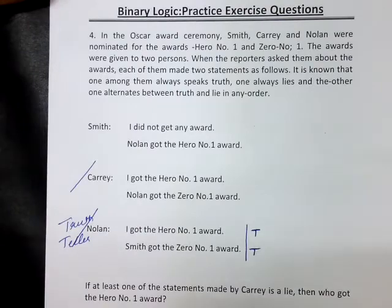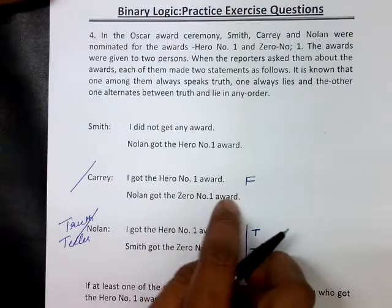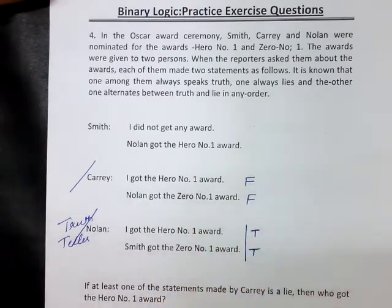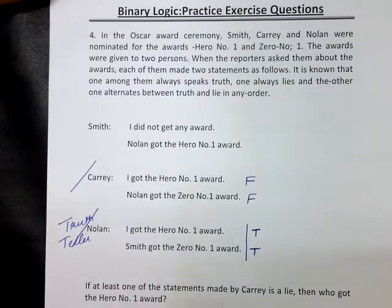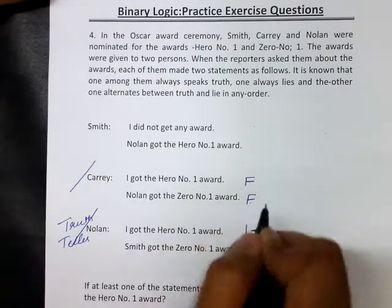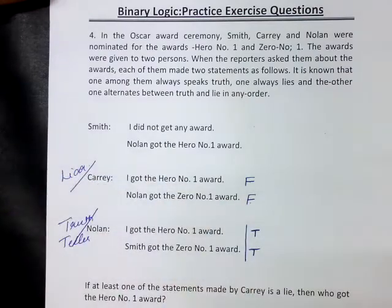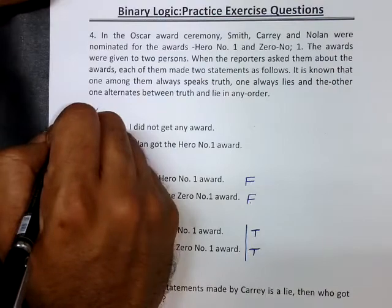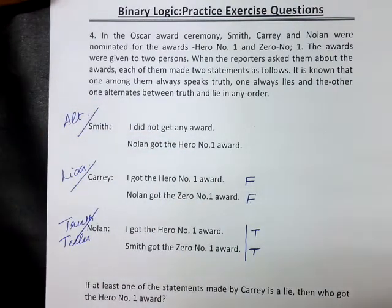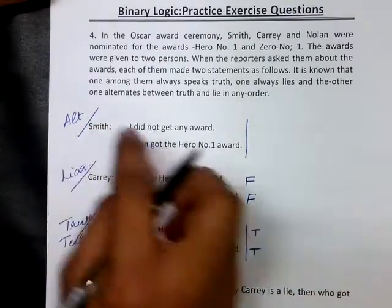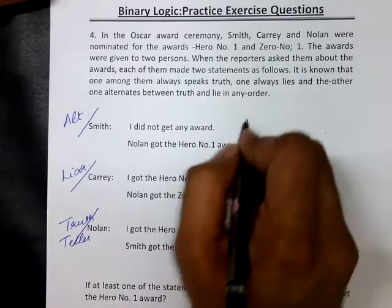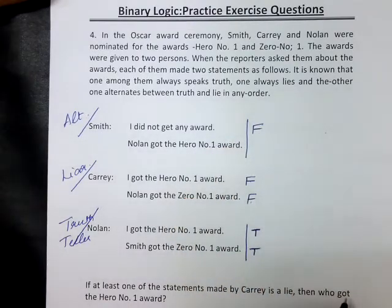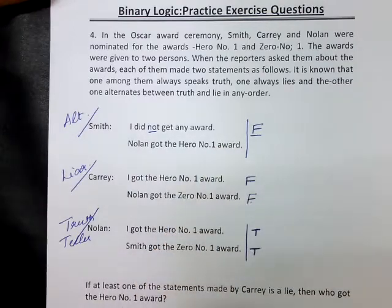Now let us consider the statements made by Carey. Carey says he got the hero number one award, which is false. Nolan got the zero number one award — that is also false, because the zero number one award was given to Smith. Both statements made by Carey are false, meaning Carey appears to be a liar in this assumption. With Nolan as truth teller and Carey as liar, Smith should be the alternator. Smith says he did not get any award — but Smith got the zero number one award, so that is false. Nolan got the hero number one award — that is true. So Smith is appearing to be an alternator.